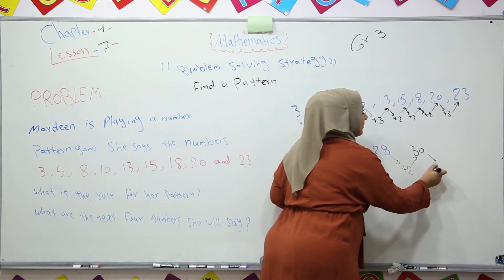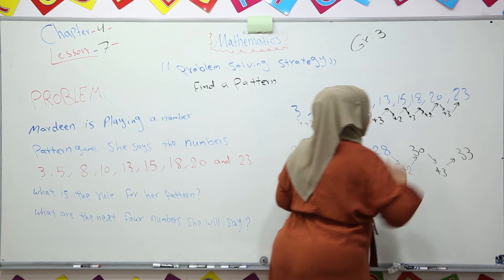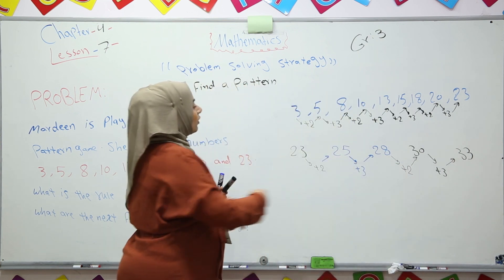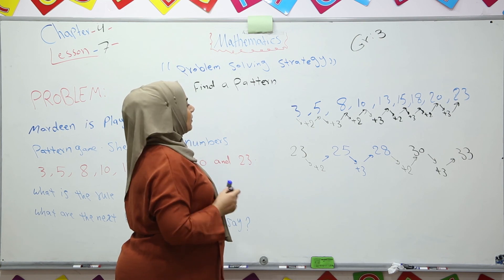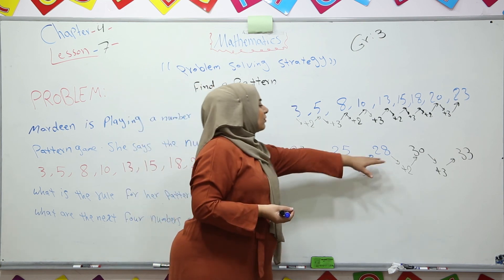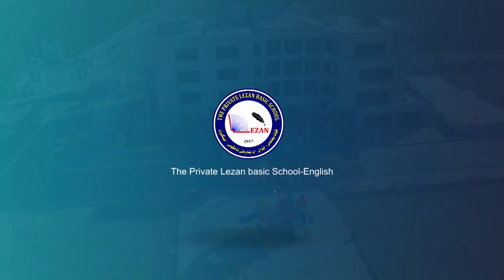This time add by 3. It is 33. So we found four numbers after 23. We found the rule and also we found four numbers after it. That's all. Thank you.